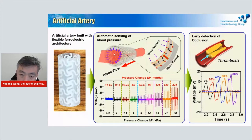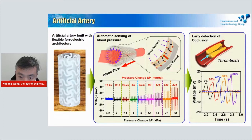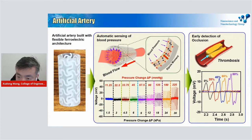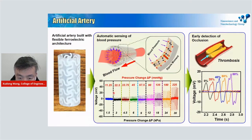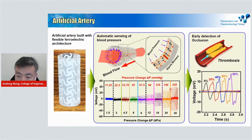More importantly, this artificial artery can generate electrical voltage when the pressure inside changes. For example, when there is blood flow through this artery system, the change of blood pressure is applied to the wall and presses our material. Our material responds with electric polarization produced onto the two built-in electrodes. Therefore, this material automatically senses blood pressure changes and produces a voltage signal that is linearly related to the blood pressure change, realizing automatic blood pressure monitoring without any batteries or other electronic systems.